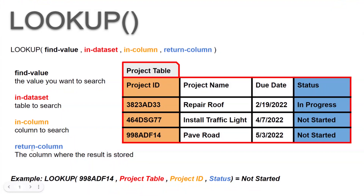And then lastly, the return column. This is simply where that lookup result lives — what column does that live in? If I find the Project ID, AppSheet is going to go to the column that you identify — in this case, Status — and return that value as the output of the function. It's simply the column containing the value you want to retrieve that matches the find value.